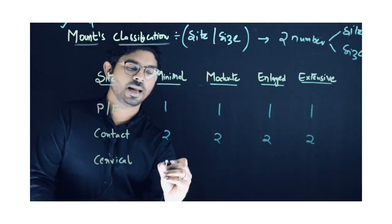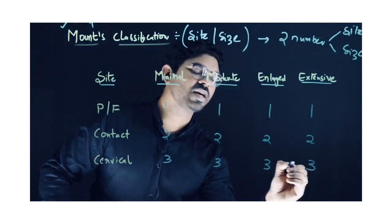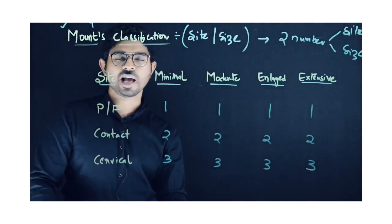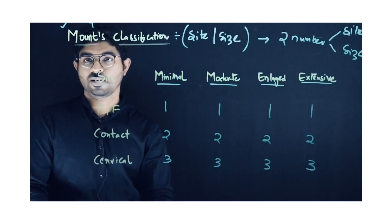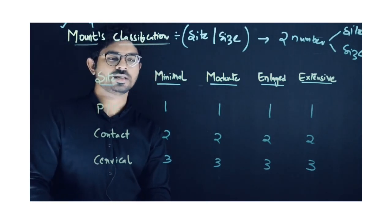the proximal surface. Number 3 represents cervical caries, which is present on the gingival one-third. According to GV Black, it comes under Class 5. Class 5 in GV Black's classification is the cervical one-third or gingival one-third.